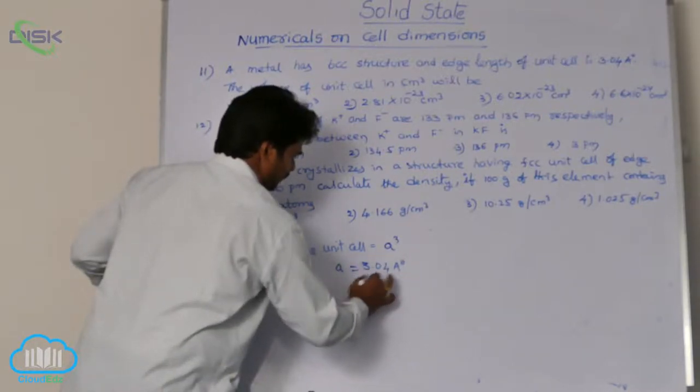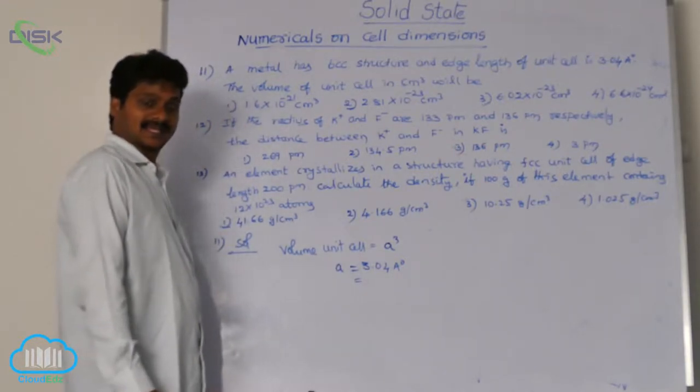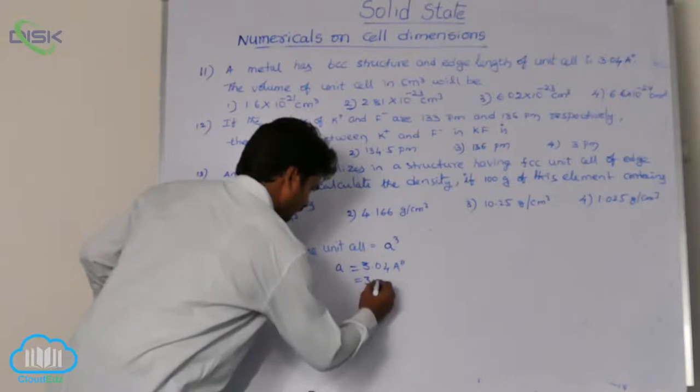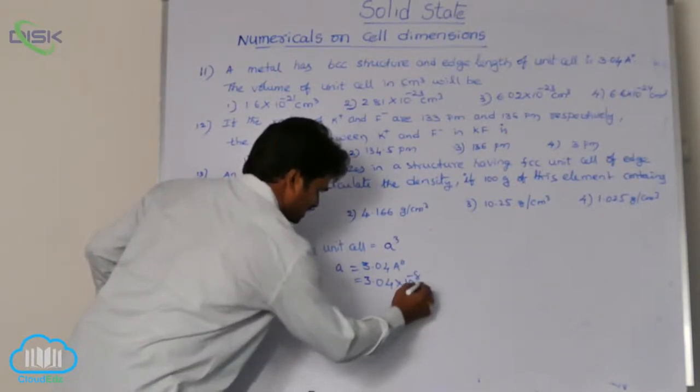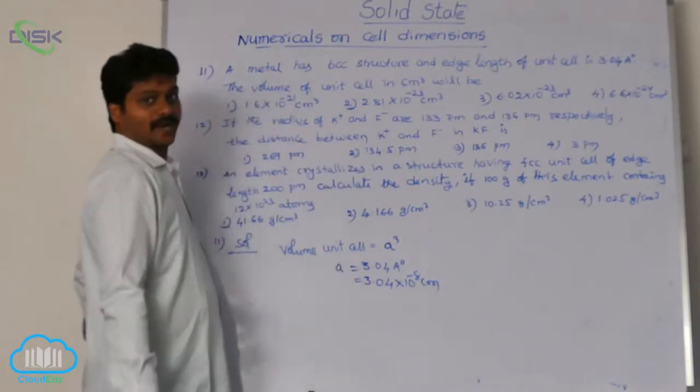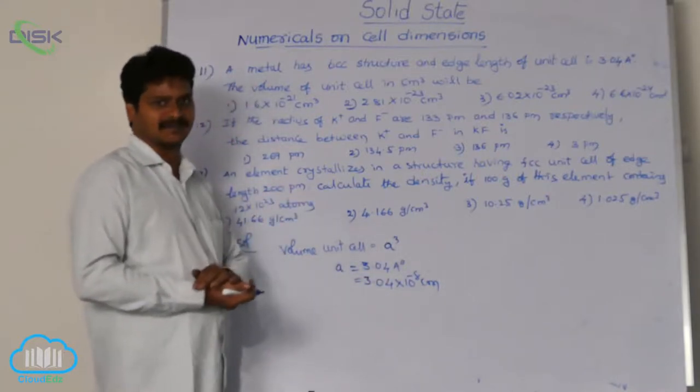One angstrom unit equal to how much in centimeters? 10 power minus 8 centimeters. So, its value 3.04 into 10 power minus 8 centimeters. One angstrom unit is equal to 10 power minus 10 meters or 10 power minus 8 centimeters.